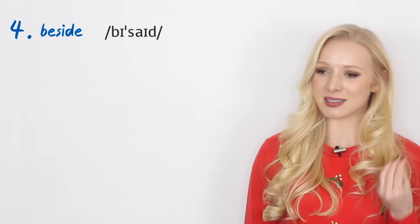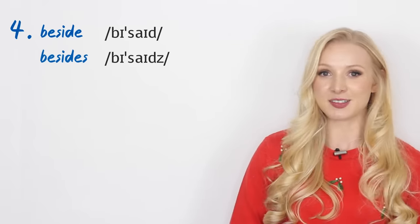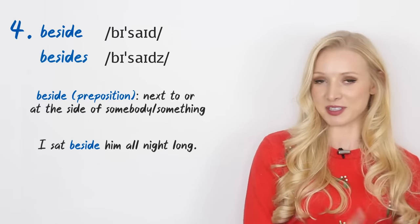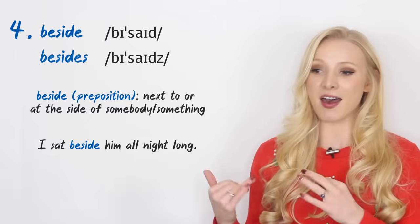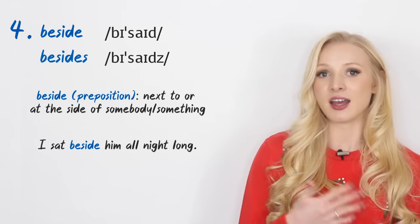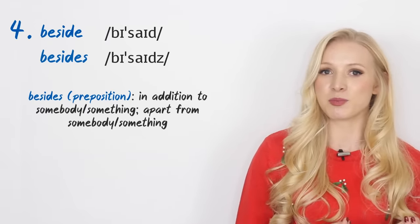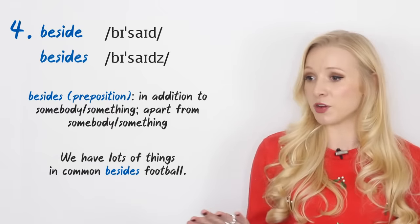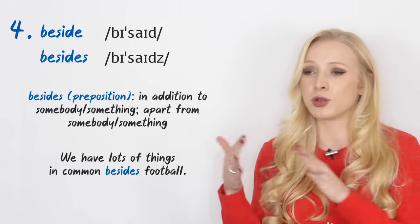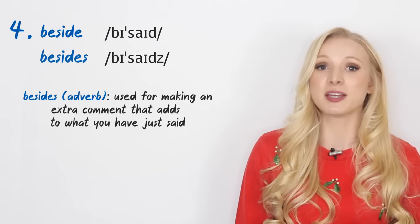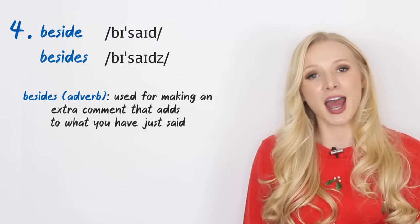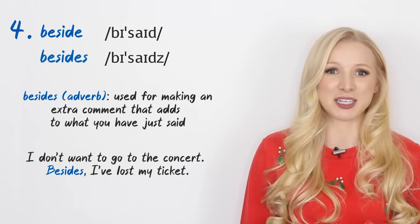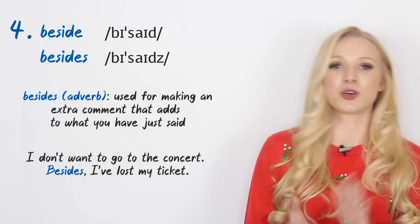Number four, we have beside and besides. So beside is a preposition meaning next to something. I sat beside him all night long. And besides can be both a preposition and an adverb as well. The preposition means in addition to or apart from. An example: We have lots of things in common besides football - apart from football, in addition to football. Besides as an adverb is used for making an extra comment which adds to what you have just said. An example: I don't want to go to the concert. Besides, I've lost my ticket. That extra comment adds to what I have previously said.